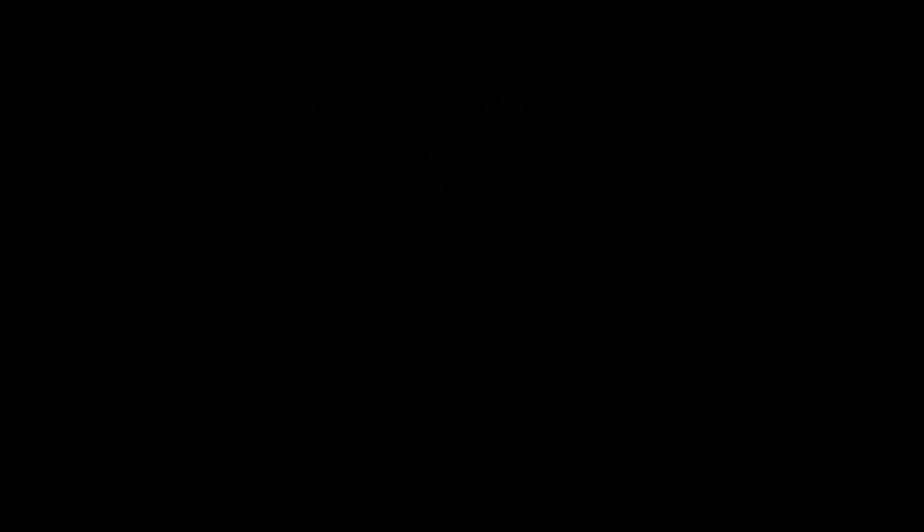The first example is what we have been looking at this whole chapter, that is, arrows in space. We've seen how to add arrows in space and how to scale them, and because these operations satisfy the necessary conditions, arrows form a linear space. Thus, we call arrows in space vectors.